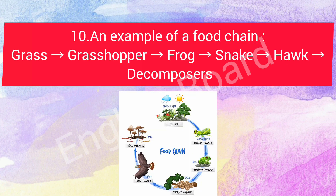An Example of a Food Chain: Grass, Grasshopper, Frog, Snake, Hawk.